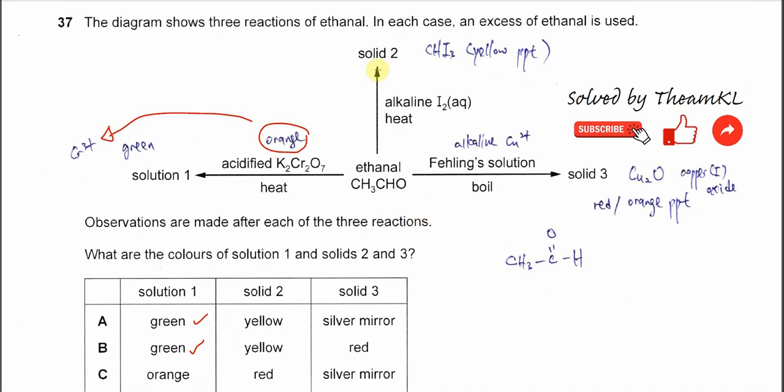For solid 2, ethanal will react with alkaline iodine solution because ethanal contains a methyl ketone structure: CH3-C=O-H. This methyl ketone in ethanal can react with the alkaline iodine solution to form solid 2, which will be a yellow precipitate of iodoform CHI3. So it will be a yellow solid, but this makes no difference between A and B. Now we need to check solid 3.